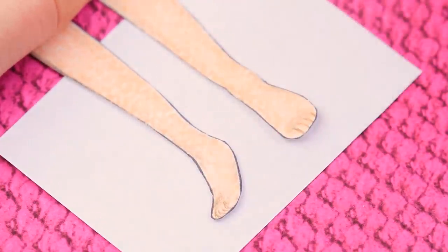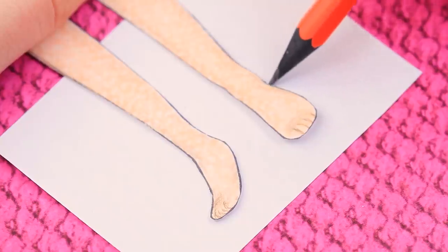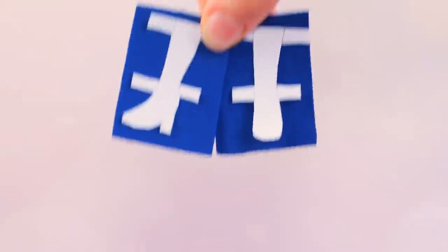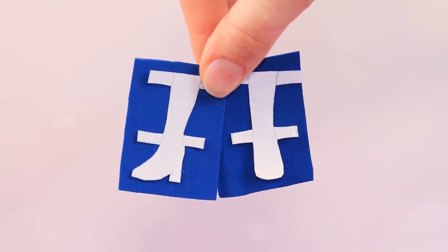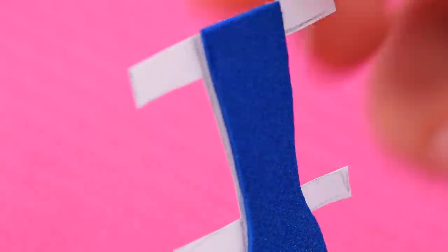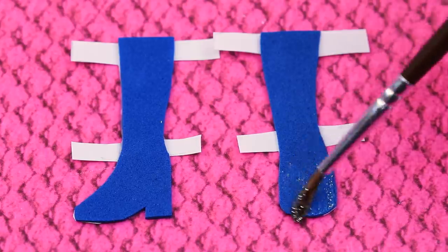Time to take care of the shoes! Trace the feet on a sheet of cardboard and draw boots with fasteners. Use blue foam paper. Make the same details. Cut out and glue them on top. Decorate with glitter glue.